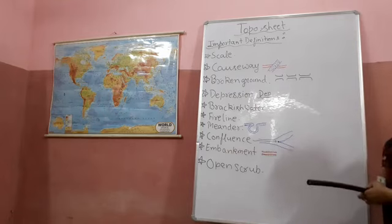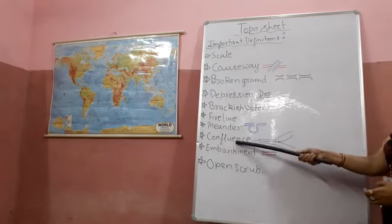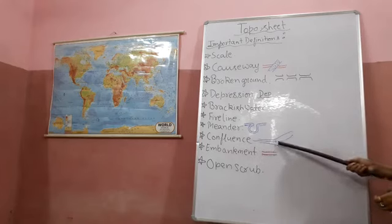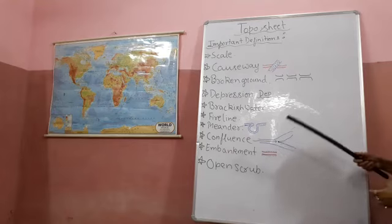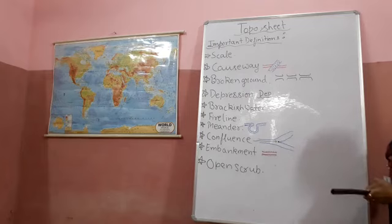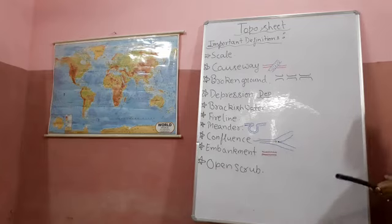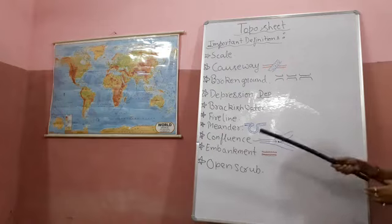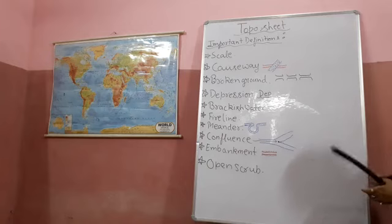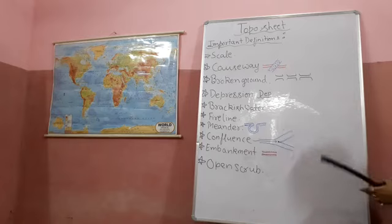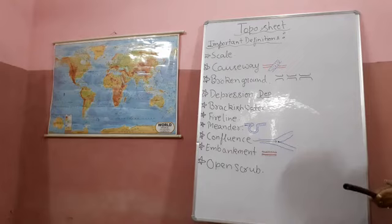Now next is confluence. Confluence means it is the intersection point where the tributary meets the main river. You can see this in the figure. That is called the confluence. If you see in board exam papers, maximum times such topographical maps are there — they will ask you to find the four-figure grid or six-figure grid reference of the area where the confluence is located.